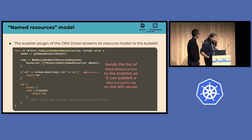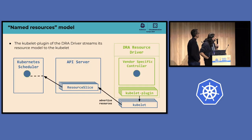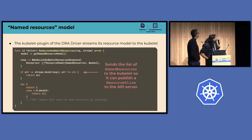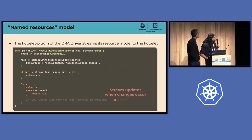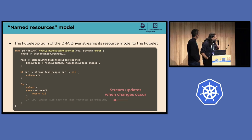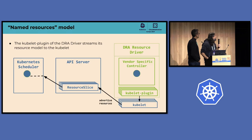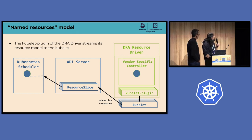You send the initial resource data and then continue to stream updates if resources go unhealthy — exactly like the existing device plugin API, just with more information. Instead of the kubelet just taking a list of opaque strings and converting that into a count written back to the node object, it creates one of these resource slice objects in the API server with all the names and their attributes. The kubelet plugin advertises resources over that streaming interface to the kubelet, and the kubelet uses those to advertise them back to the Kubernetes scheduler using the resource slice object in the API server.